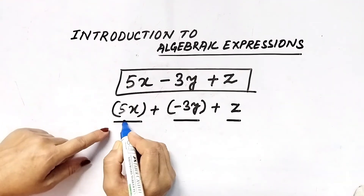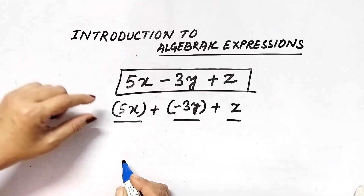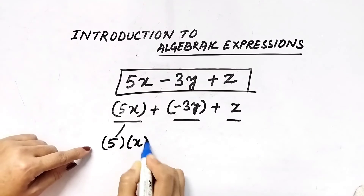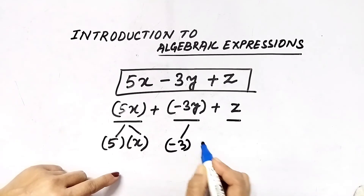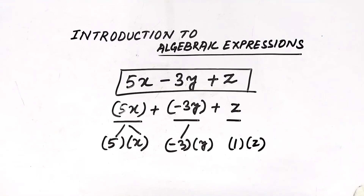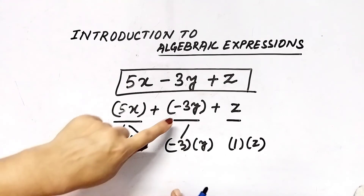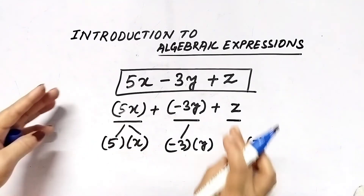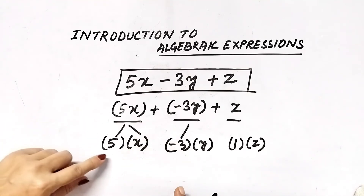Next, what are the factors of a term? When factors are multiplied together, they form one term. Here, 5 is multiplied with x; negative 3 is multiplied with y; and 1 is multiplied with z. So in 5x, 5 is a factor and x is a factor. In negative 3y, negative 3 is a factor and y is a factor. In z, 1 is a factor and z is a factor, since z has no other factors.